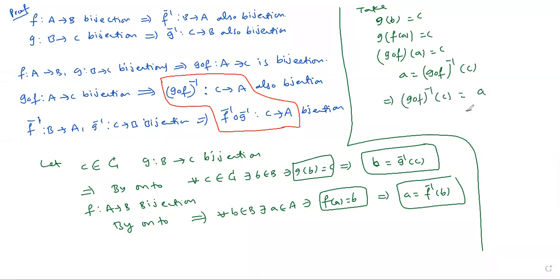And F inverse of B equals A. If we replace B, F inverse of B is just F inverse of B. And G inverse of C is B. So F inverse of G inverse of C equals F inverse circle G inverse of C.